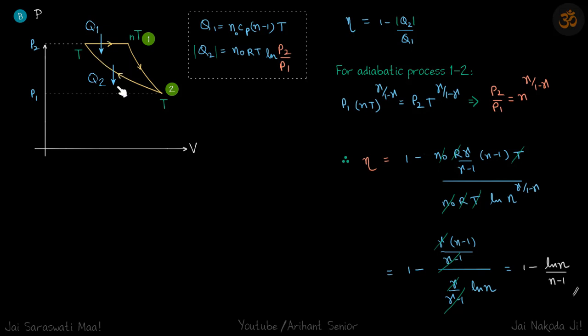So again, same thing. Q1 is here, Q2 is here, so 1 minus Q2 by Q1. And this time we are going to write the isothermal heat as NRT ln P2 by P1, because calculating this ratio is going to be simpler than the ratio of these volumes.